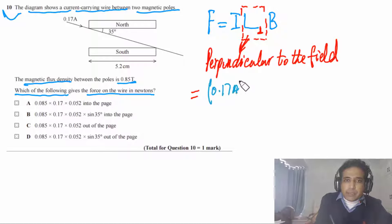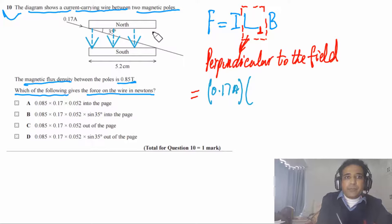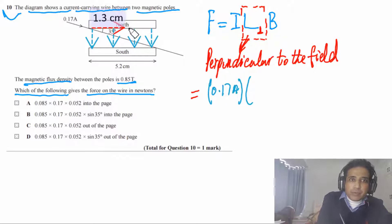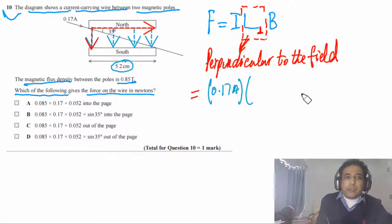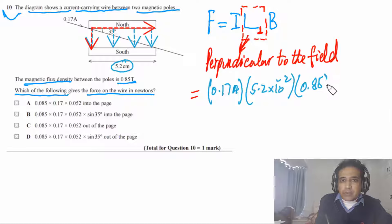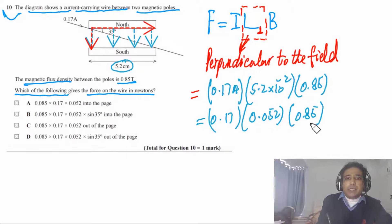Current is 0.17 A. The wire has two components: one along and one perpendicular to the field. We take the perpendicular component, which is 5.2 cm = 5.2 × 10⁻² m. With B = 0.85 T, force = 0.17 × 5.2 × 10⁻² × 0.85.